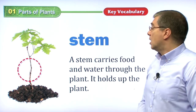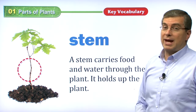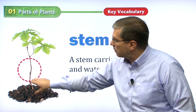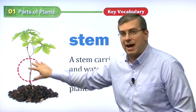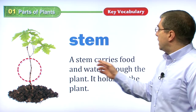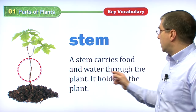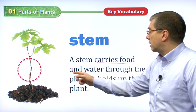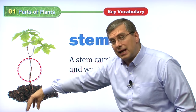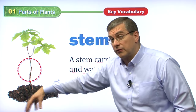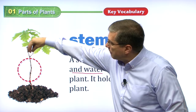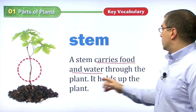Let's talk about the next part of the plant, which is the stem. We started at the bottom — the roots, which we can't see. But now we're coming up and we can see the stem. What does the stem do for the plant? A stem carries food and water through the plant. The roots down here are taking in water and also food from the soil, and the stem carries that food up to the leaves.